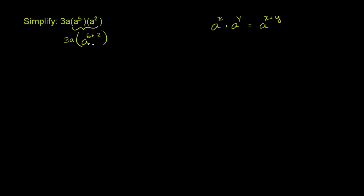Now let's take a step aside and realize why this worked. Let's think about what a to the fifth times a squared means. a to the fifth literally means a times a times a times a times a. Now a squared literally means a times a. And we're multiplying the two times each other, so we're multiplying these five a's times these two a's.